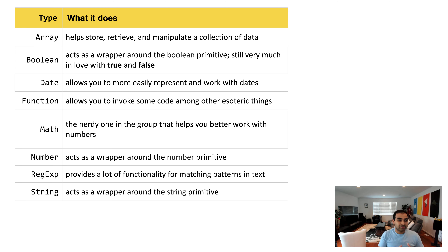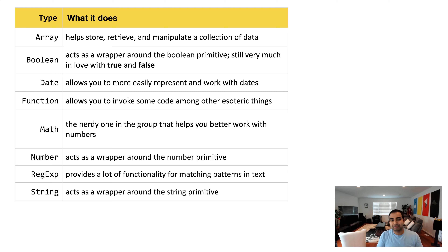These predefined objects are your array, boolean, date, function, math, number, regex, and string. Here's an interesting thing: some of these values — like number, string, array, boolean — we saw them before in the primitives table as well. That's because a lot of the things we work with in JavaScript happen to live in two different states. They can live as a primitive, but they can also live as an object.